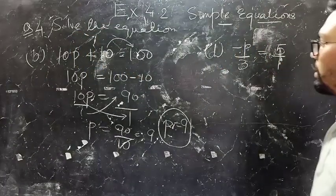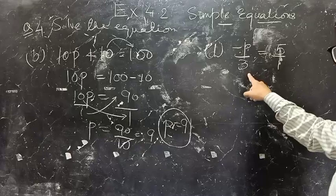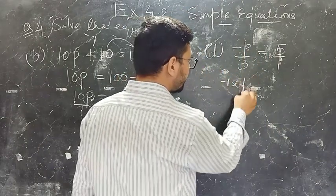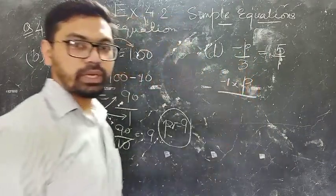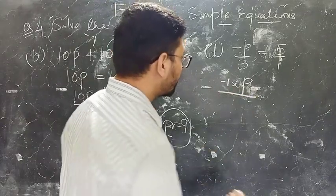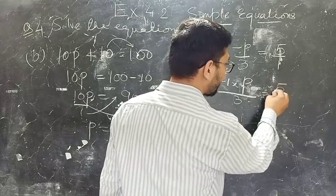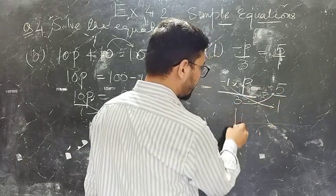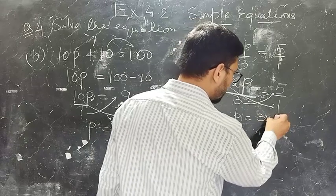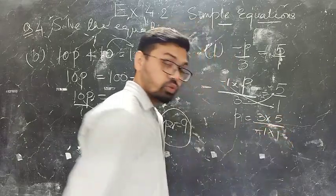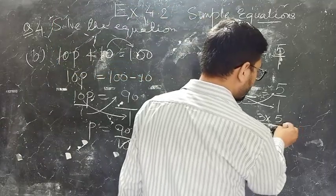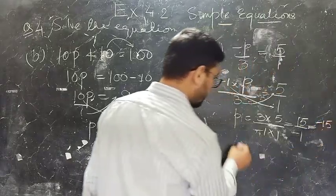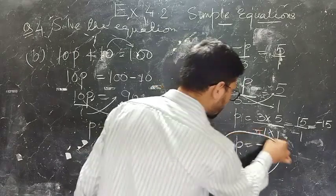Part D: minus P upon 3 equals 5 divided by 1. Minus P can be written as minus 1 into P. So minus 1 into P divided by 3 equals 5 divided by 1. Cross multiply the values: 3 into 5 equals minus 1 into 1, so P equals minus 1 into 15. The answer is P equals minus 15.